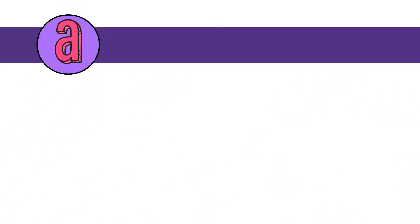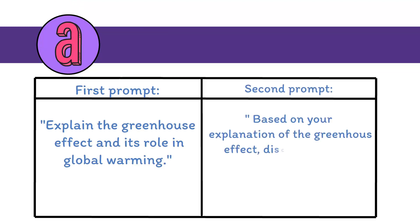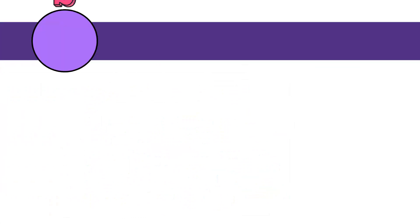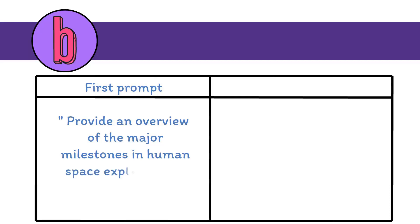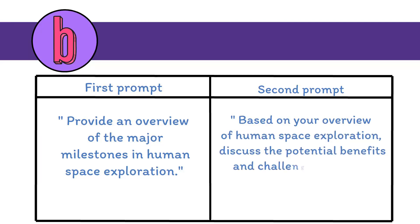A. First prompt: Explain the greenhouse effect and its role in global warming. Second prompt: Based on your explanation of the greenhouse effect, discuss the main sources of greenhouse gas emissions and potential strategies for reducing them. B. First prompt: Provide an overview of the major milestones in human space exploration. Second prompt: Based on your overview of human space exploration, discuss the potential benefits and challenges of future missions to Mars and beyond.